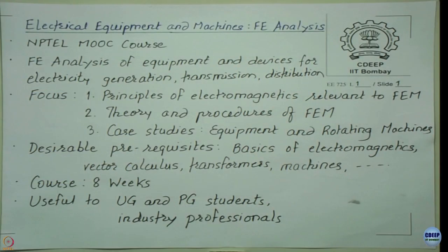The course is 8 weeks long, beginning with introductory lectures on basics of electromagnetics, then moving to FEM theory — first 1D, then 2D — followed by static, time harmonic, transient, and coupled analyses. This course would be useful to practicing professionals solving industry problems, as well as undergraduate and postgraduate students. Undergraduate students will understand the potential of finite element method, positioning them to use this tool effectively if they pursue research or industry careers.